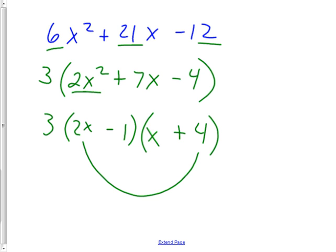The outside makes positive 8. Inside makes negative 1. That makes positive 7x. Yay! And the last make negative 4. So it worked.